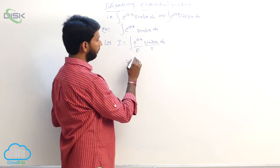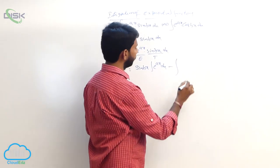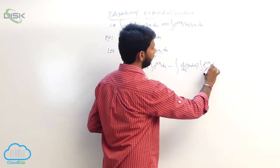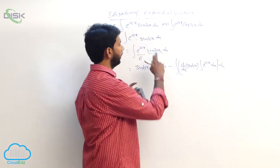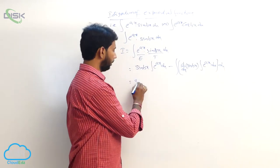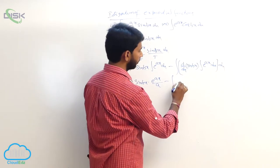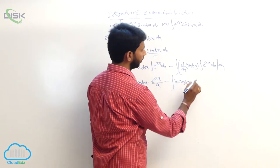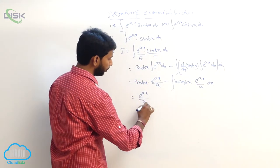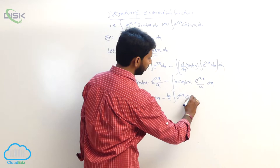Apply by parts with first function as sin bx and second function as e power ax: sin bx into integral of e power ax dx minus integral of d by dx of sin bx into integral of e power ax dx. This gives sin bx into e power ax by a minus integral of cos bx into e power ax by a dx. That is e power ax by a into sin bx minus b by a into integral of e power ax into cos bx dx.